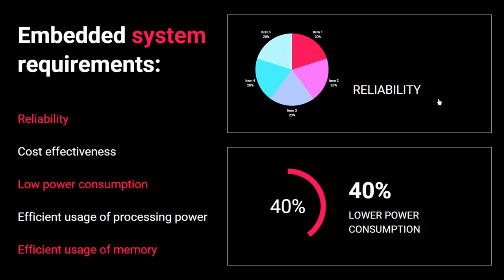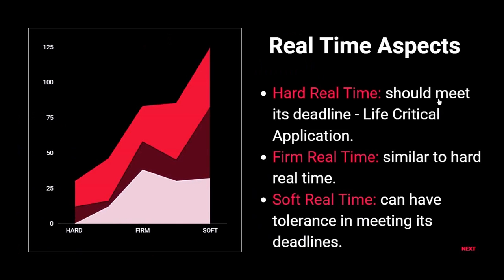The embedded system requirements include reliability, cost effectiveness, low power consumption, and efficient usage of processing power and memory — the processor should consume less memory and less power. For real-time aspects: hard real-time must meet its deadline like life-critical applications; firm real-time is similar in terms of speed and memory; and soft real-time applications can have tolerance in meeting their deadlines.